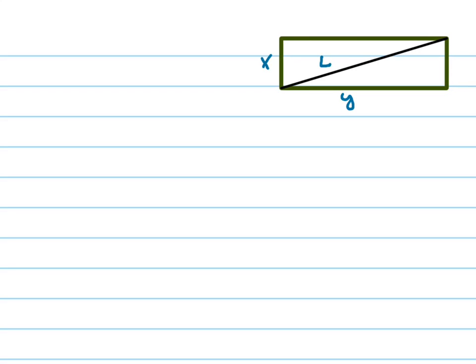Here's a related rate problem. Let L be the diagonal of a rectangle whose sides have length x and y, and assume that these all vary with time. They want us to know how DL/DT, DX/DT, and DY/DT are related to each other.